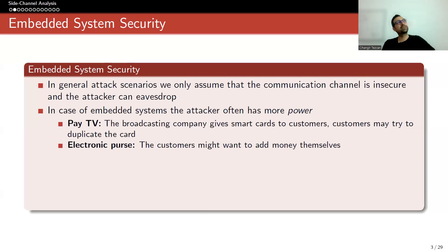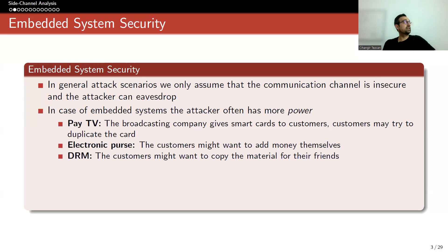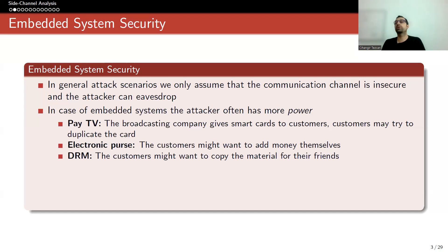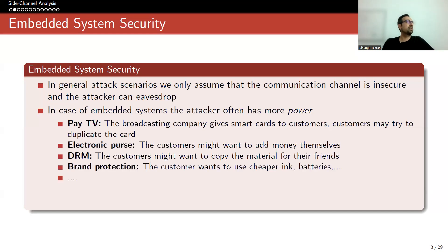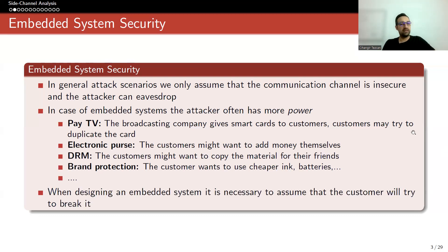Consider an electronic purse — the customers might want to add money to themselves. With digital rights management, customers might want to copy the material for their friends. Think about old PlayStations or other consoles — you can buy some old PlayStations where you're allowed to install any game without paying, because it is broken, and generally they are broken via side channel attacks. For brand protection, the customer wants to use cheaper ink or batteries rather than buying from your company. These are important concepts, but you are giving the customer the physical device. When designing an embedded system, it is necessary to assume that the customer will try to break it. That is the whole idea.